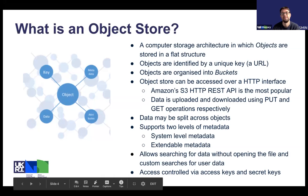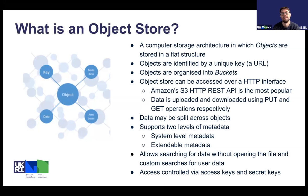There's also extendable metadata, so you can actually embed data about the object within the object itself. That allows searching for data without opening the file — you can query what's called the metadata server on an object store. You can enable custom searches for user data. Access is controlled by access keys, secret keys, and also access control lists. This overcomes some of the limits you have on a POSIX file system with access control, where you can run out of user group IDs and so on.